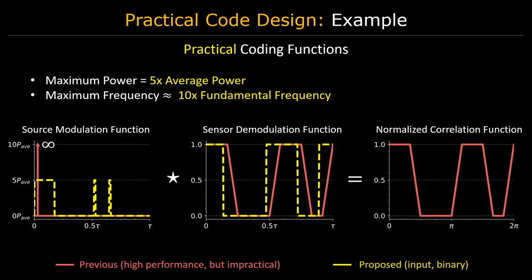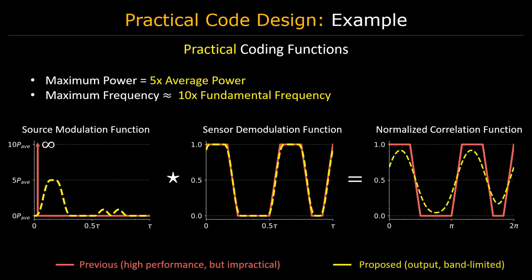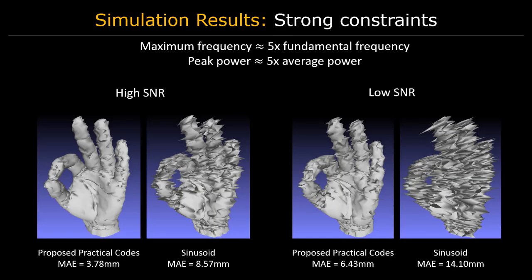Fortunately, given hardware constraints, we can factorize Hamiltonian codes into practical modulation and demodulation functions. Due to the finite bandwidth, the constrained functions only approximate the Hamiltonian correlation functions. Nonetheless, the new practical Hamiltonian codes continue to achieve higher depth estimation accuracy under a wide range of SNR levels, despite imposing strong hardware constraints.